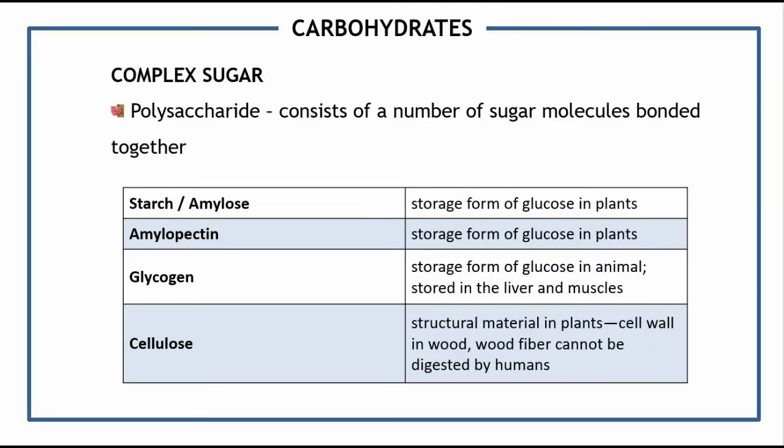Another classification of carbohydrates is complex sugar. Under complex sugar, we have polysaccharides, which consist of a number of sugar molecules bonded together — essentially many monosaccharides combined. For polysaccharides, we have starch, including amylose and amylopectin. Starch is the main energy storage material in plants. Both amylose and amylopectin are found in starch granules; the difference is that amylose is a straight-chain polysaccharide with no branches, while amylopectin is a branched-chain polysaccharide with about 20 subunits.